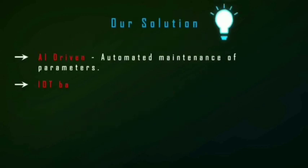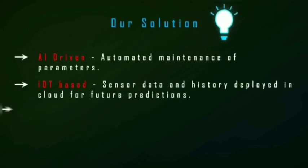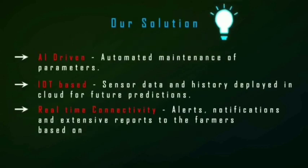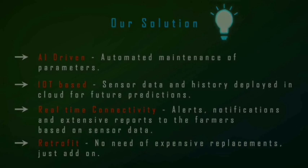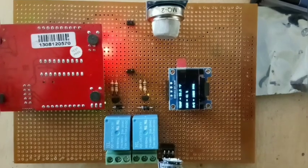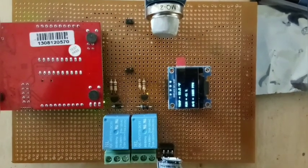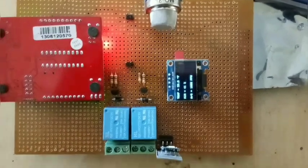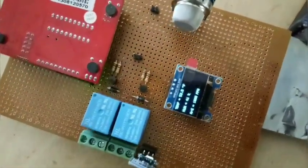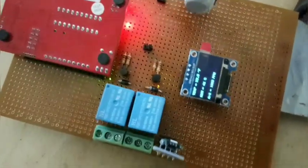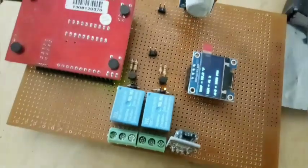Solution: IoT-based parameter monitoring and data storage with mobile-controllable functions. This is our prototype, which consists of an MSP430 microprocessor, a gas sensor, and a temperature and humidity sensor.